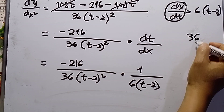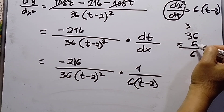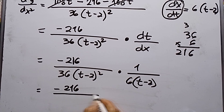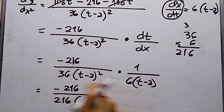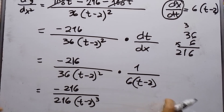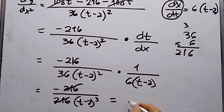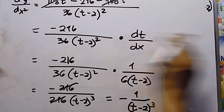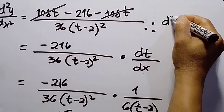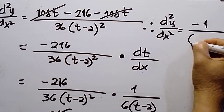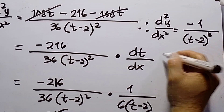36 times 6 equals 216, so negative 216 over 216 cancels to negative 1. Combining the (t minus 2) factors: (t minus 2) squared times (t minus 2) to the power of 1 equals (t minus 2) to the power of 3. Therefore, my final answer is d²y over dx² equals negative 1 over (t minus 2) to the power of 3.